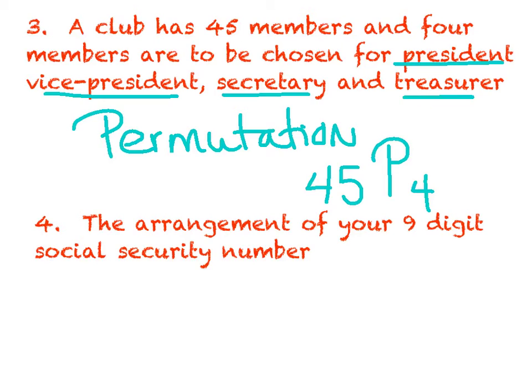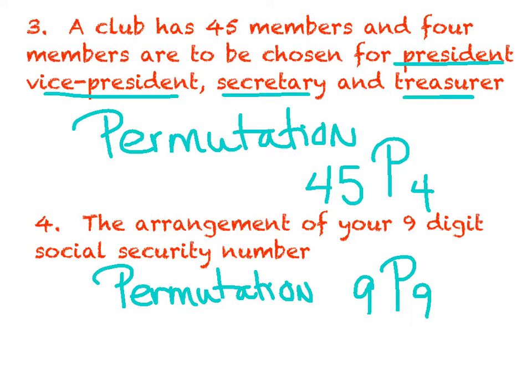Number four, the arrangement of your nine digit social security number. Well, just ask yourself, is the order important or not important? Can you take those nine numbers and mix them up or is it important the way you write those nine numbers down? Is it specific? Well, I would say it's very specific. Therefore, this would be a permutation. I can't just write those nine numbers down any way I want. The order matters. So in this case, I would have nine numbers to choose from and I would be using all nine. So nine permutation nine.